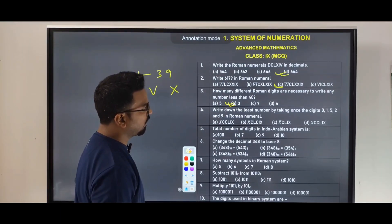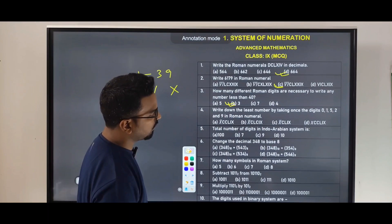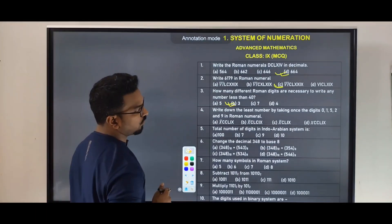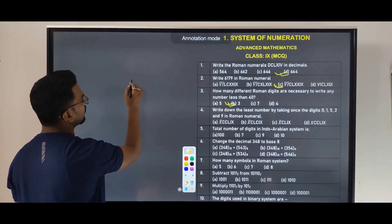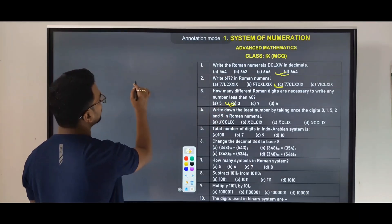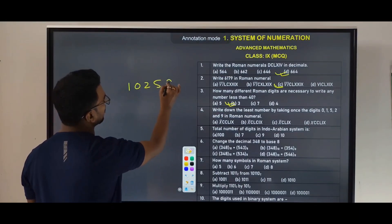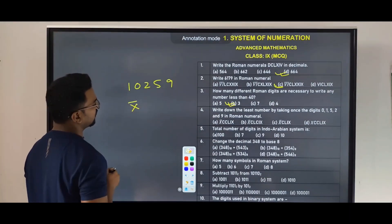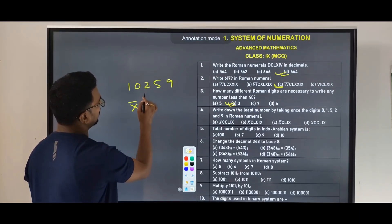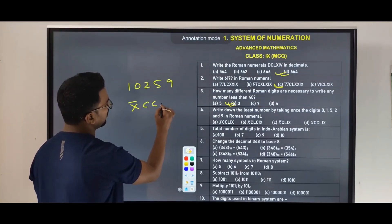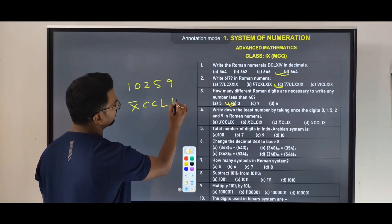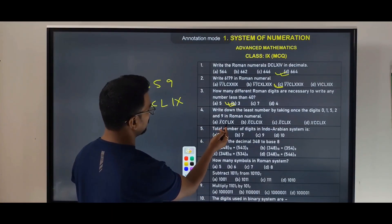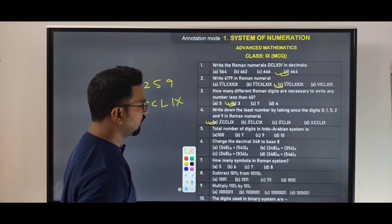Next question: write down the smallest number by taking the digits 0, 1, 5, 2, and 9 in Roman numerals. The smallest number formed using digits 0, 1, 2, 5, 9 is 10259. In Roman numerals: 10000 is X-bar, 200 is CC, 50 is L, 9 is IX. So the answer is XCCLIX, which corresponds to option A.